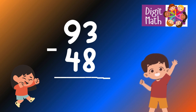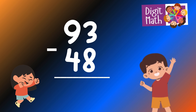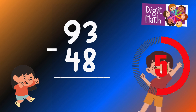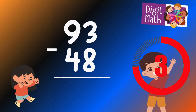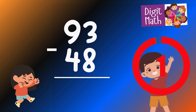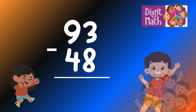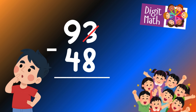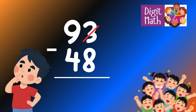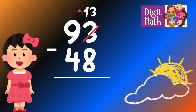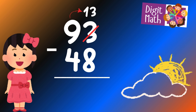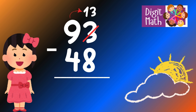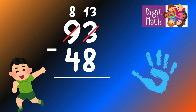93 minus 48 — time to think. In the Units column, we have 3 minus 8. Since it's not possible to subtract 8 from 3, we need to borrow from the Tens column. In the Tens column, we have 9. We take 1 from the Tens, leaving 8 in the Tens column, and turning the Units column into 13.